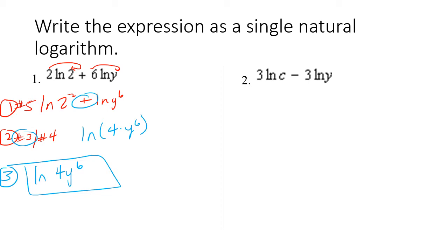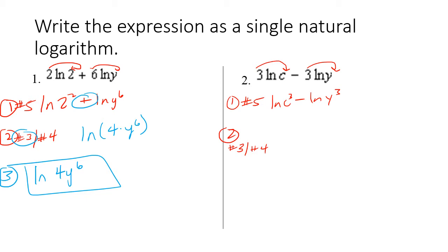Over here, same thing. Starting with step one, using property number five, I apply the three and that gives me the natural log of c cubed minus the natural log of y cubed. Step two — looking at what I have, I have subtraction, so I'm using property number four, which gives me the natural log of c cubed divided by y cubed.